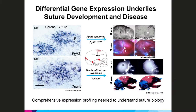Similarly, Twist1 loss-of-function mutations cause the Saethre-Chotzen craniosynostosis syndrome in humans. The coronal suture is open, visible as a line in the radiograph of a normal skull on the left, but on the right the suture is fused and absent in the radiograph of the Saethre-Chotzen patient. These phenotypes are also recreated in a mouse model, with the normal open coronal suture in the wildtype mouse and the fused coronal suture in the Saethre-Chotzen mouse.